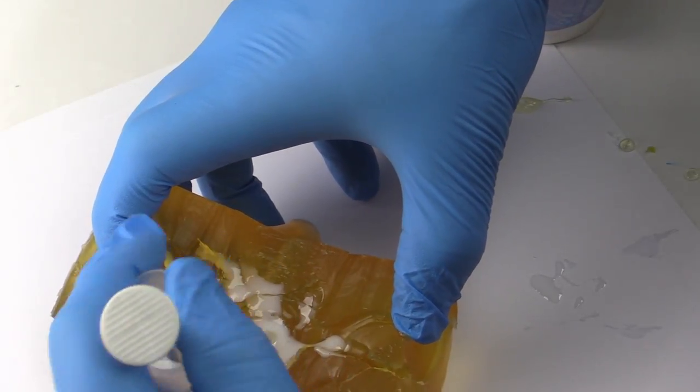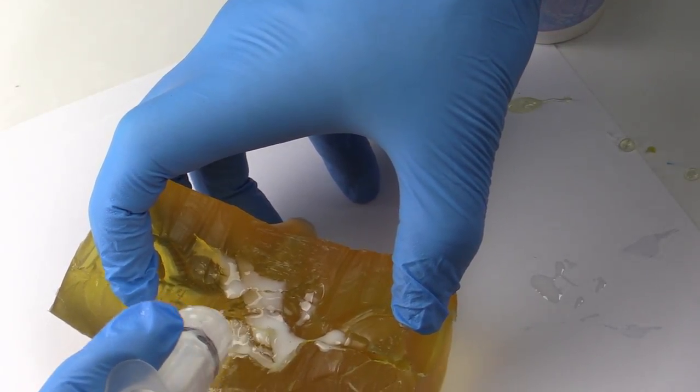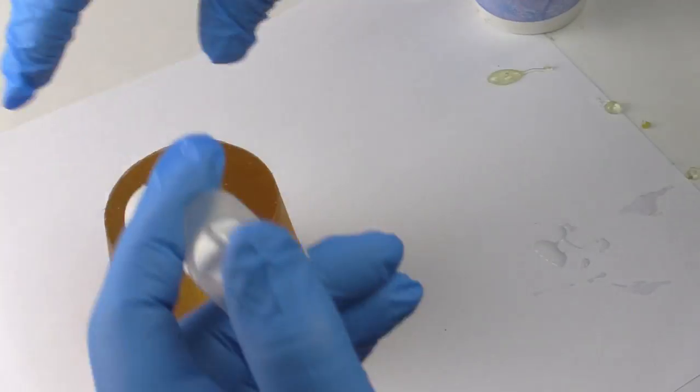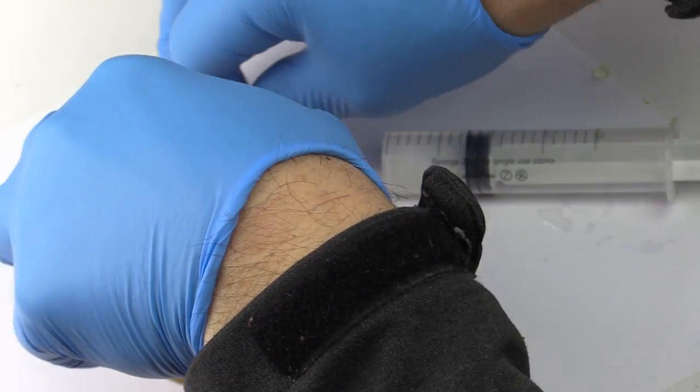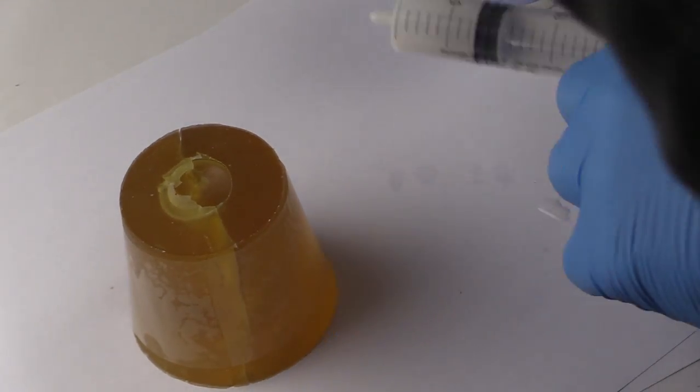Just in case, we also put some resin into the football hand and the person's head and the helmet. Now, we close the mold up and tape it shut. We then pour more resin into the base and through the legs.